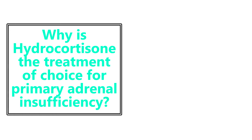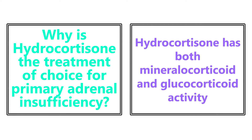Why is hydrocortisone the treatment of choice for primary adrenal insufficiency? High-yield physiology: hydrocortisone has both mineralocorticoid and glucocorticoid activity. In primary adrenal insufficiency, the adrenal gland itself fails to produce hormones. Hydrocortisone replaces all the steroid activity that the adrenal glands would normally produce, compensating for that deficiency.